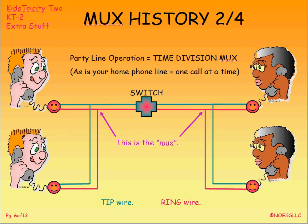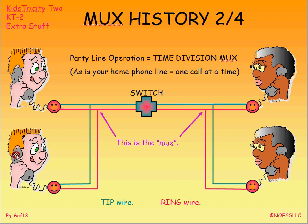Here is actually a time division multiplexing methodology, although no one ever thought of it this way. In this case I've got a switch out here with tip and ring wire going out to multiple customers on both sides, and they're all tied physically together. Normally known as a party line — when this person is talking to that person, these people are nice enough not to listen in.